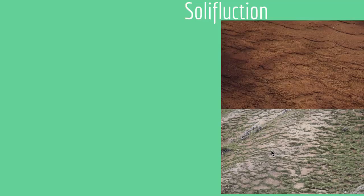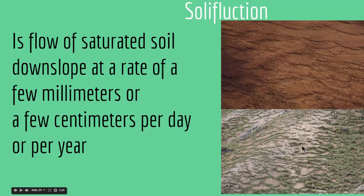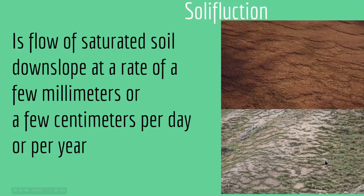Then we have solifluxion, which is very interesting. Solifluxion is the flow of saturated soil downslope at a rate of a few millimeters or centimeters per day or per year. On steep mountains, you'll see these kinds of ripples or waves — they are a result of saturated soil coming down a slope at a very small rate, creating a wavy or ripple-like shape.